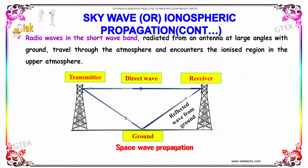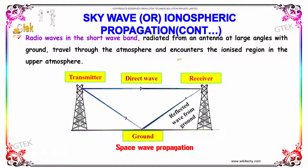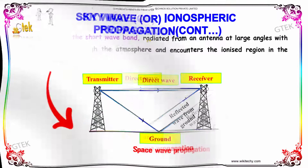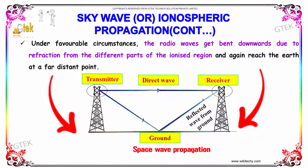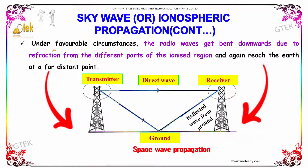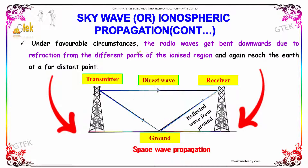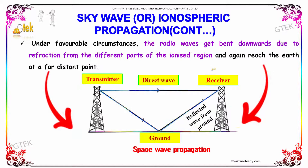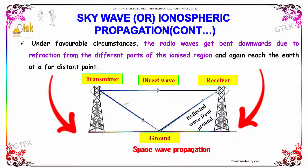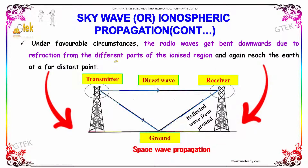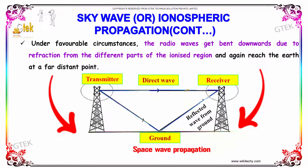Short wave band radio waves radiated from an antenna at large angles with the ground travel through the atmosphere and encounter the ionized region in the upper atmosphere. Under favorable circumstances, the radio waves get bent downwards due to refraction from different parts of the ionized region and again reach the earth at a far distant point.